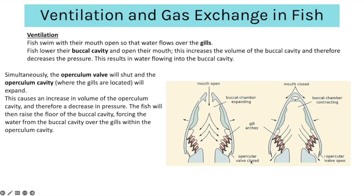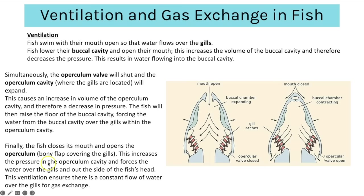The fish then raises the floor of their buccal cavity, forcing water from the buccal cavity over the gills and out of the operculum. When the buccal cavity is raised and the mouth is closed the pressure is high, opening the valve and allowing water to flow over. This ventilation ensures a constant flow of water over the gills for gas exchange.